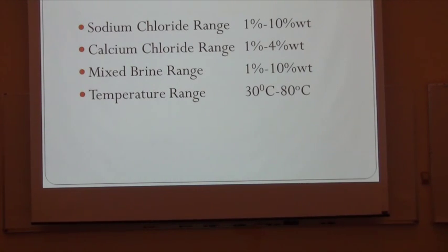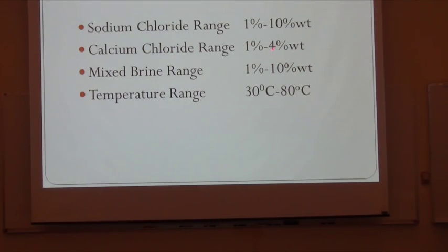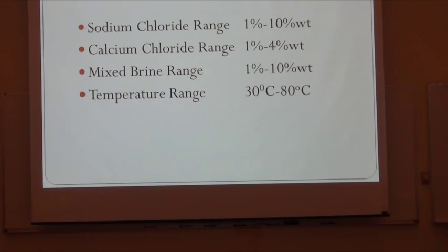For the experimental purposes, I used different weight percentage samples. For sodium chloride, I used 1 to 10 percent weight percentages. For calcium chloride, 1 to 4 percent — I'll explain the reason for the lower range later. For the mixed brine, I chose from 1 to 10 percent. For the temperature, I went from 30 to 80 degrees Celsius, because underground conditions tend to be hotter.